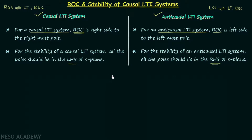You can also remember one simple unified property: for a system to be stable, the j-omega axis — the imaginary axis of the S-plane — must be included in the ROC. Whenever the region of convergence is given, you can determine whether the LTI system is stable simply by checking whether the j-omega axis is included in the region of convergence or not. There is no need to remember the two separate properties.